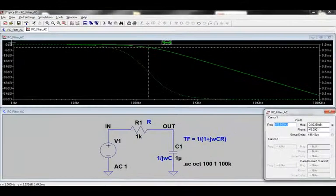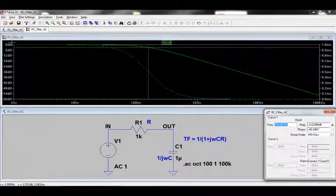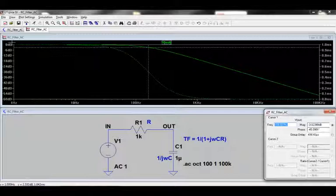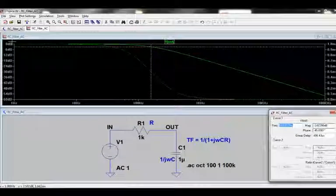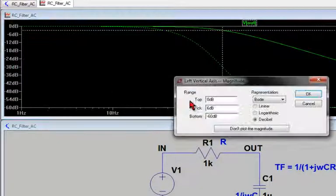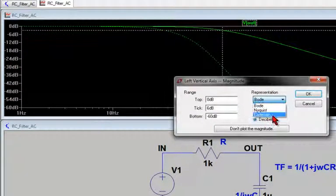Most of the time, the Bode plot is all we need. However, LTSpice can also provide a Cartesian plot, showing how the real and imaginary amplitudes of the output change with frequency. To select the Cartesian plot, left-click over the dB axis, and from the drop-down menu, select Cartesian.